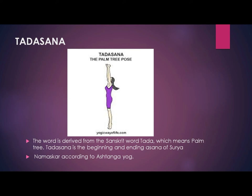The first asana is Tadasana, also known as the palm tree pose. The word is derived from the Sanskrit word Tada, which means palm tree. Tadasana is the beginning and ending asana of Surya Namaskar. According to Ashtanga Yoga, the first and last step of Surya Namaskar is Tadasana. In Tadasana we lift our heels up and stretch our body to its extreme level.